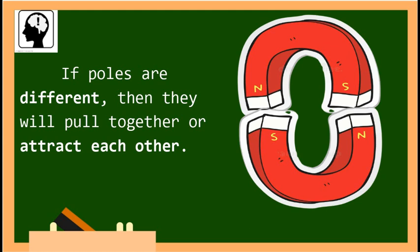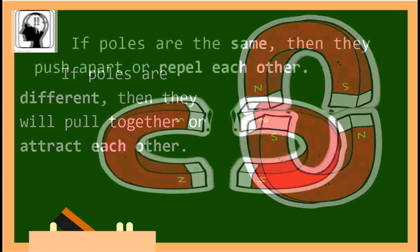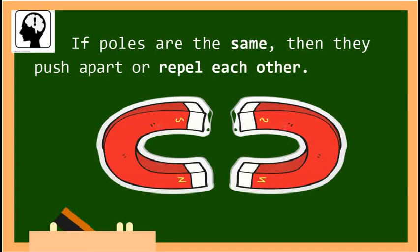If poles are different, then they will pull together or attract each other. Remember, kids: if poles are the same, then they push apart or repel each other. The push and pull of a magnet is called magnetism.